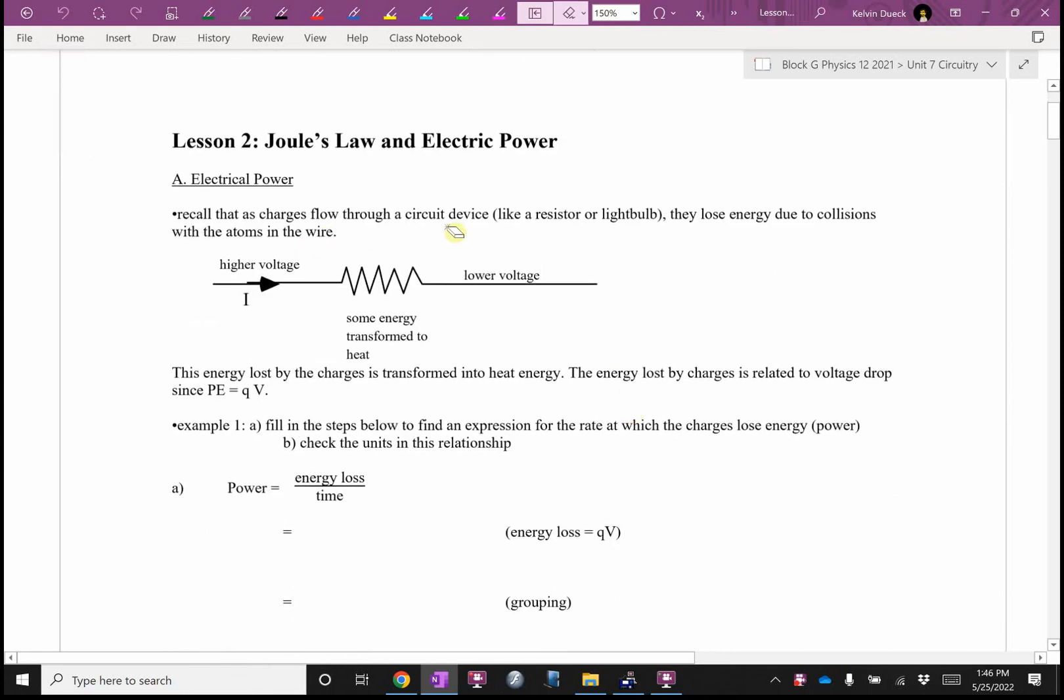As charges flow through a circuit device like a resistor or light bulb, they lose energy due to collisions with atoms in the wire. If we have a high voltage of 12 volts and measure 4 volts after the resistor, we lost 8 volts. This means every coulomb of charge that traveled through lost 8 joules of energy, because voltage is joules per coulomb.